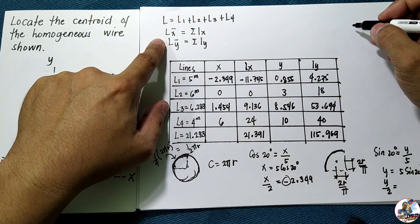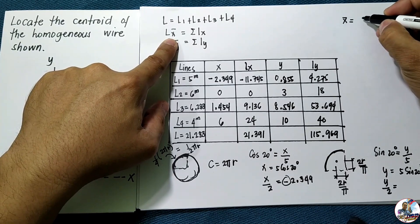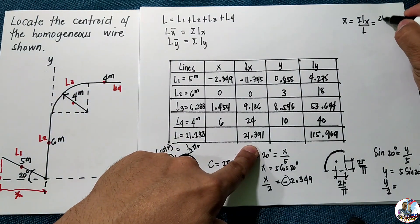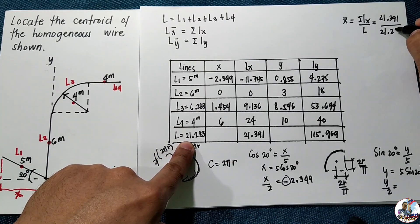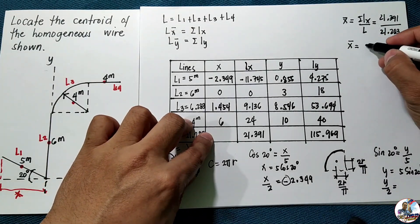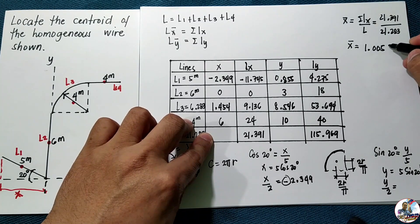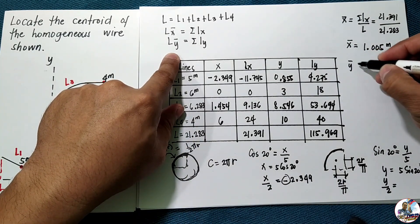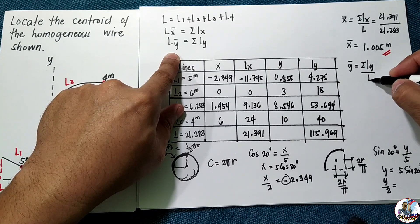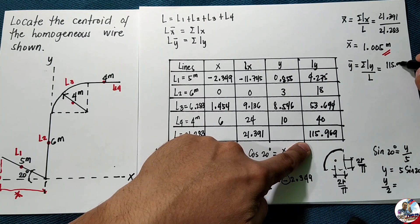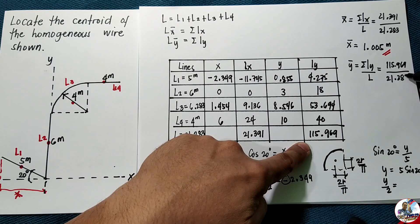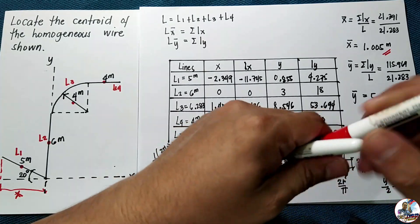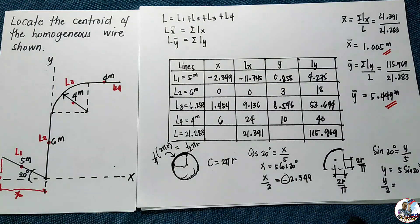Going back to the centroid formula, x̄ equals summation of L·x divided by L, which is 21.391 divided by 21.283, so x̄ equals 1.005 meters. For ȳ, using ȳ equals summation of L·y divided by L, that is 115.969 divided by 21.283, giving ȳ equals 5.449 meters. These are the final answers for the centroid location.